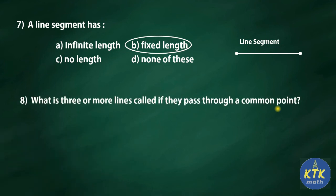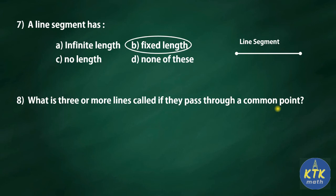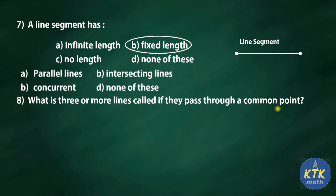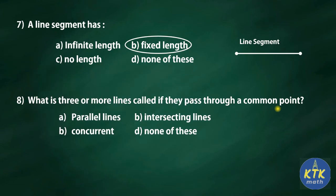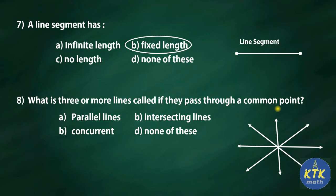Eighth question: what are three or more lines called if they pass through a common point? Options are parallel lines, intersecting lines, concurrent lines, or none of these. Parallel lines do not meet at any point. Intersecting lines meet at a common point. But when many lines all meet at one single point, those lines are called concurrent lines. Answer: concurrent lines.